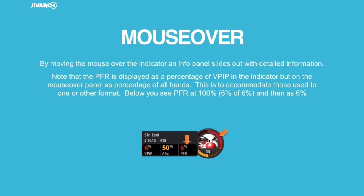This is the Javaro HUD here. It's blocking a little bit of the ring — we'll talk about that in a second. But what I want to feature is the three stats that everyone asks about, like what are these things I keep talking about? The three stats you see in the Javaro bar — the ring as well as the pop-up information — are VPIP, preflop raise, and aggression frequency.